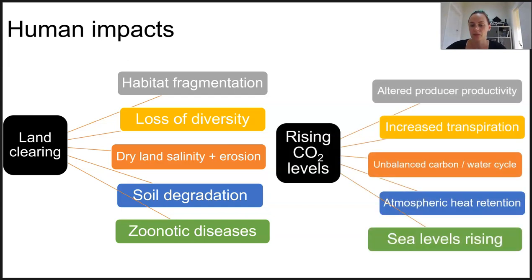If we look at the rising CO2 levels in our atmosphere, it in turn causes so many problems. Altered producer productivity which can lead to increased transpiration, all of that can actually lead to atmospheric heat retention, unbalanced carbon and water cycles, and eventually those sea levels rising.